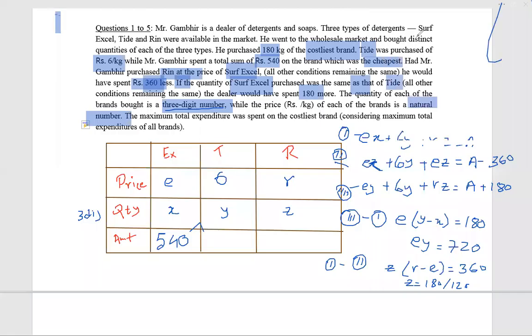From these two derived equations, we have two more conclusions: one is y greater than x, another is r greater than e. It was all positive. Also, we have got 6 is greater than e. This is the cheapest one, and this is 540.